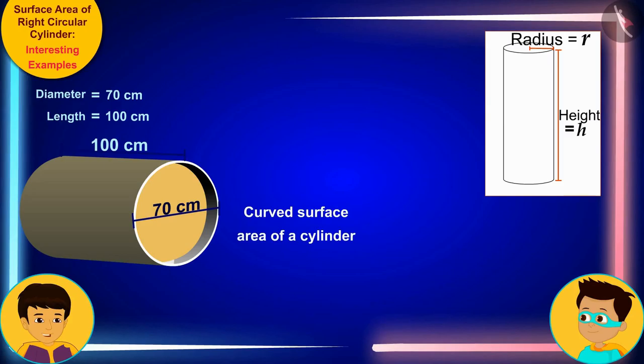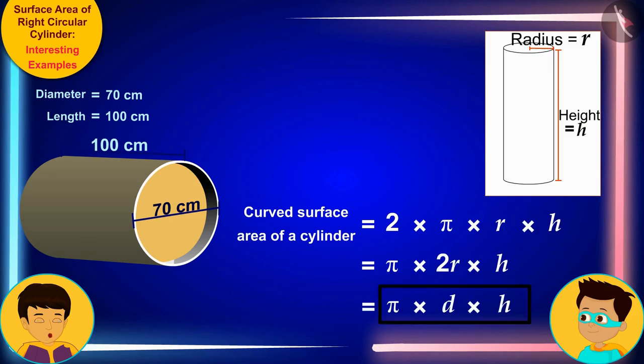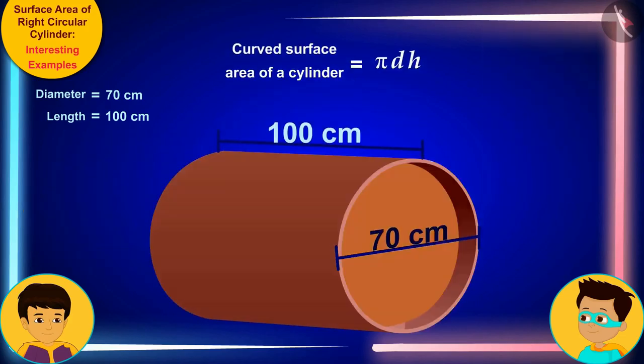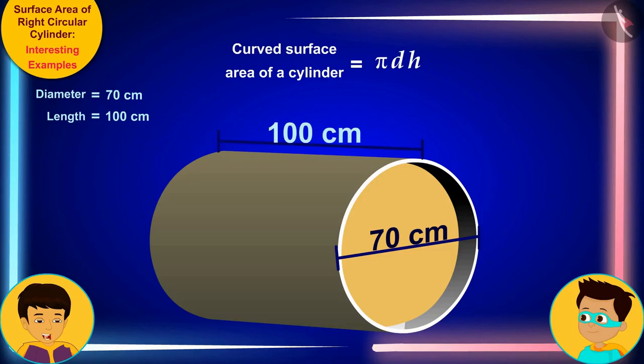The diameter of the roller is 70 centimeters and the length is 100 centimeters. Now look Thomas, we know that the curved surface area of a cylinder is the product of 2πr and h, where r and h are the radius and height of the cylinder respectively, which we can also write as the product of πdh.